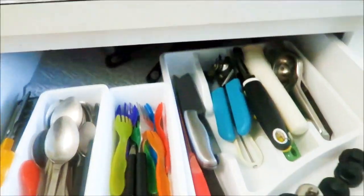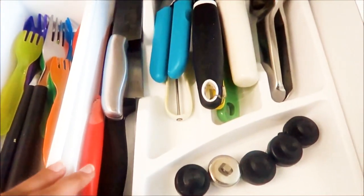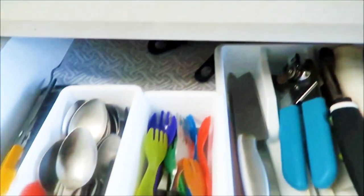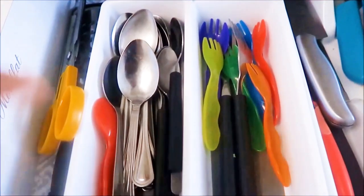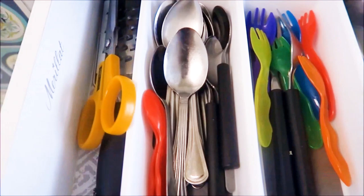In this drawer I have the organizing tray from the dollar store in which I keep the knives, can opener, lemon squeezer, the cooker whistles, etc. Also I keep my spoons and forks in small bins.